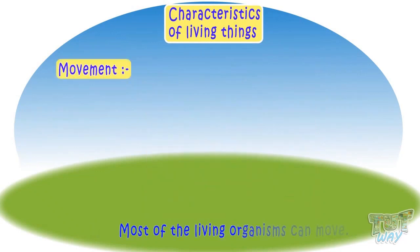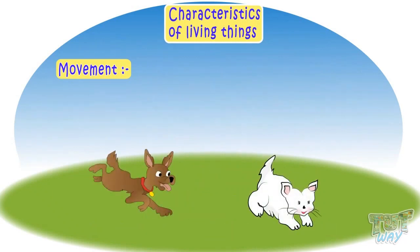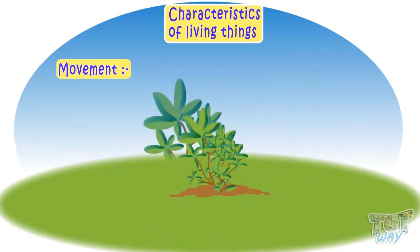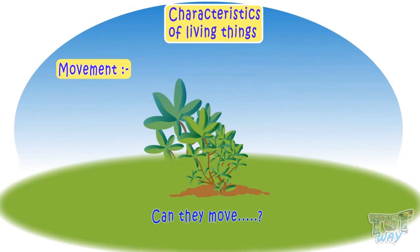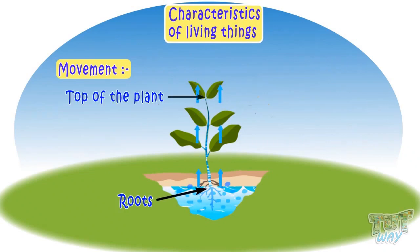Most living organisms can move — like we can walk, run, and go anywhere. Our pets are living things and they can move. Are plants living organisms? Yes, plants are living organisms. They can't move from one place to another, but they can move water inside them from one part to another. They take in water from their roots and move that water from the roots to the top of the tree, to each and every leaf.